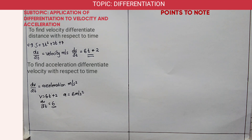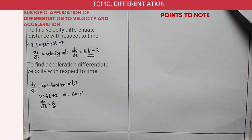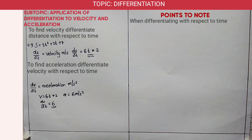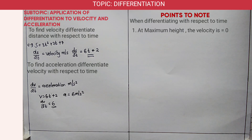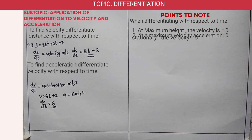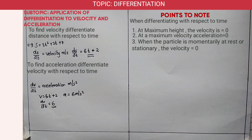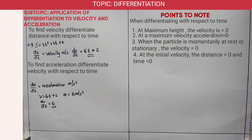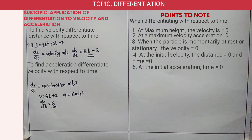There are additional concepts to know. When differentiating with respect to time: at maximum height, velocity is 0; at maximum or minimum velocity, acceleration is 0; when the particle is momentarily at rest, velocity is 0. At initial velocity, distance is 0 and time is 0. Finally, at initial acceleration, time is 0.